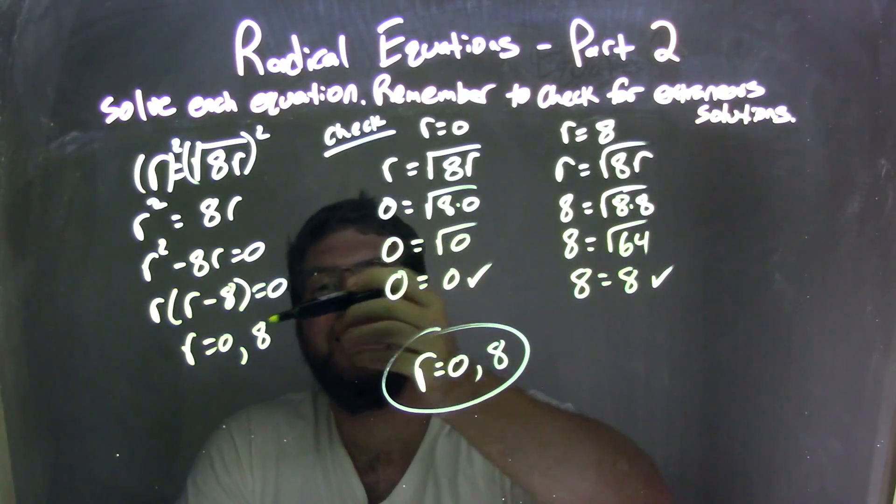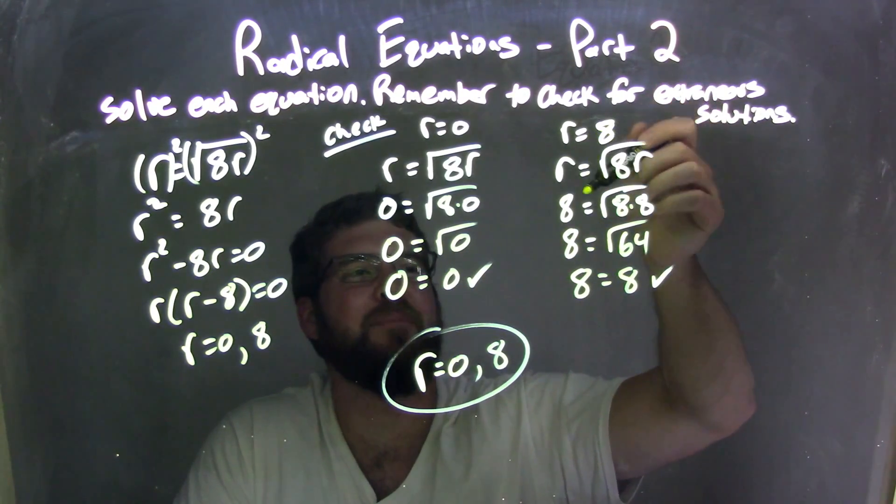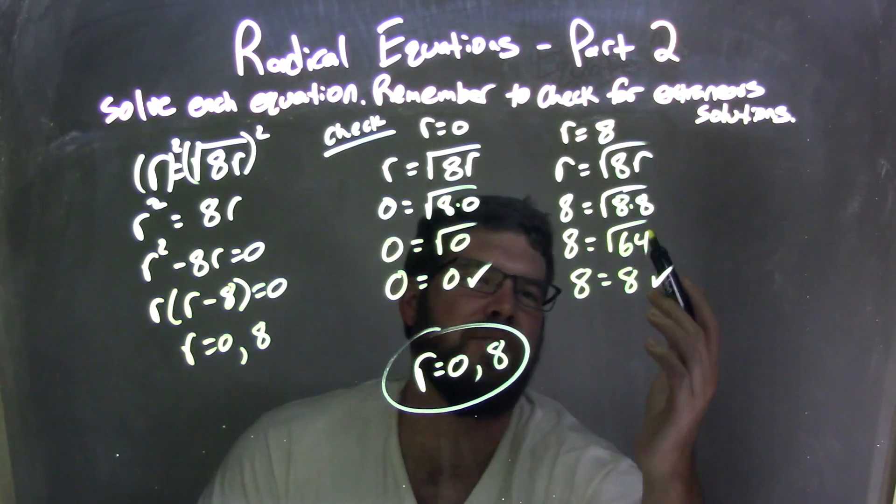I also checked 8. I had two numbers and I checked the other one. I plugged 8 back into the original equation. Simplified. Again, harder, but it's okay.